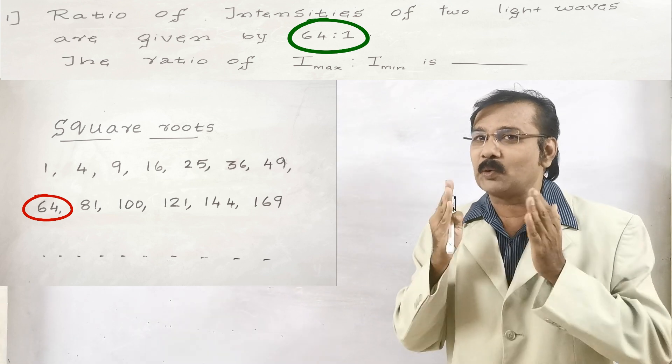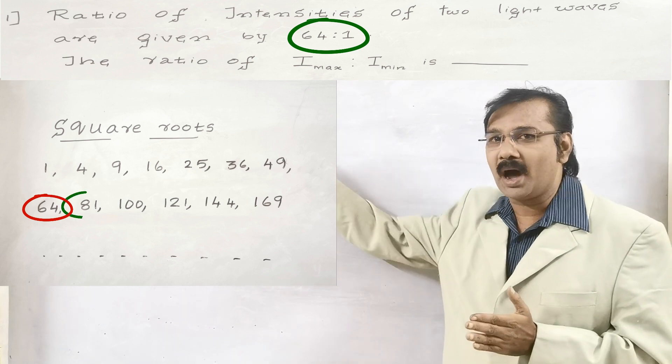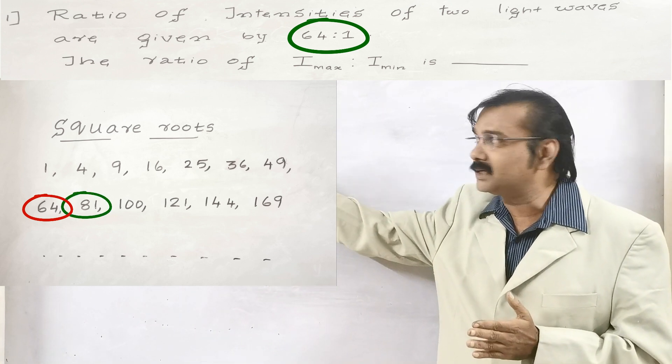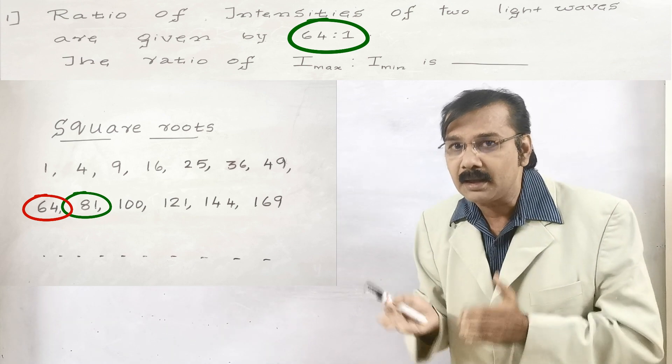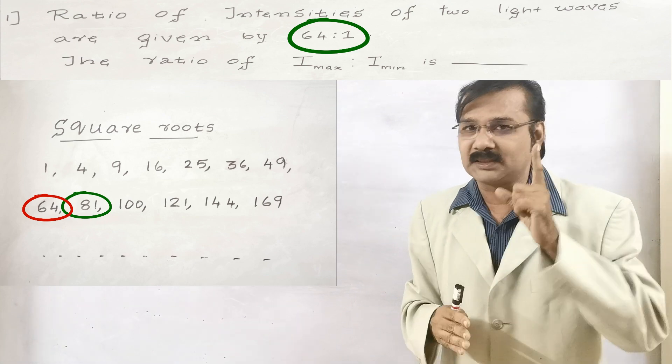So after 64, the square root number is 81. Remember, it has been encircled there, 81. And what is the number before 64? It is 49.